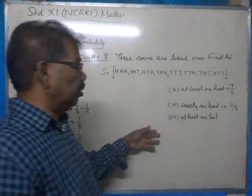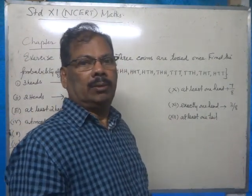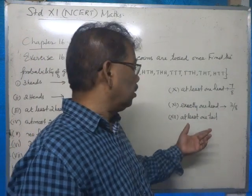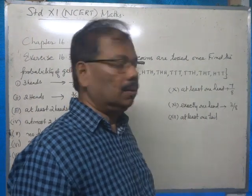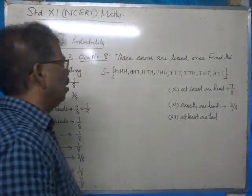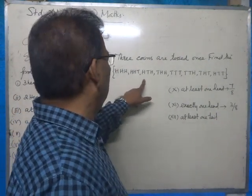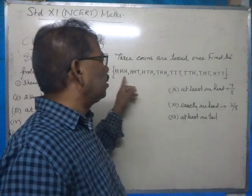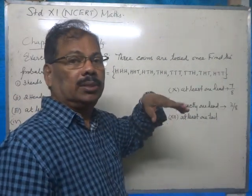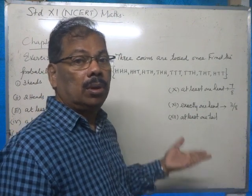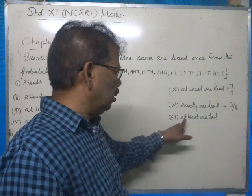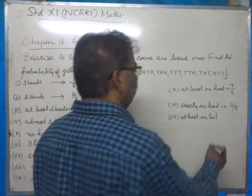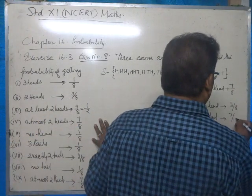The last part, number twelve, asks for the probability of getting at least one tail. We exclude the first occurrence, which is all heads. In all the other seven occurrences there is one or more tail, so the answer is seven by eight.